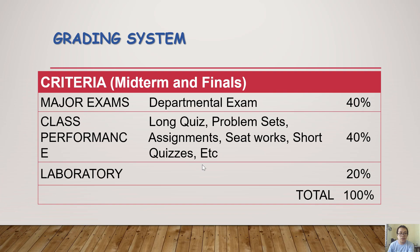Forty percent comes from class performance, which includes long exams, long quizzes, problem sets, assignments, short quizzes, and seat work. I will announce the deadline for problem sets and assignments. For long quizzes, I will announce one week before. This 40% is divided into 30% for long exams and 10% for problem sets and assignments.